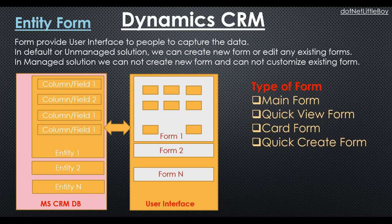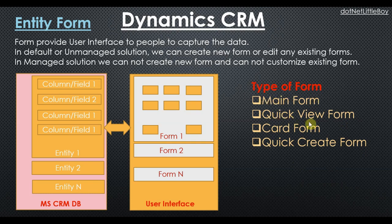We use a combination of main forms and quick view forms to display data on the portal as well. Main forms are used to capture data on Dynamics where we have all components and properties available, but not all of those can be used in the quick view form or quick create form. Quick view forms are used to display data of related entities using the lookup value of another entity. If you want to display data of entity A on entity B, entity A should have a lookup on entity B.